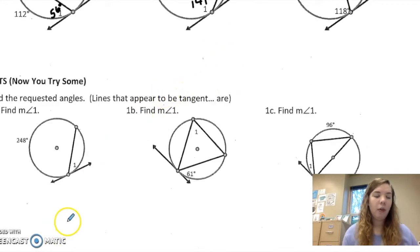So here, we're trying to find angle 1. So if I take 360 minus 248 is 112. Half of 112 is 56.